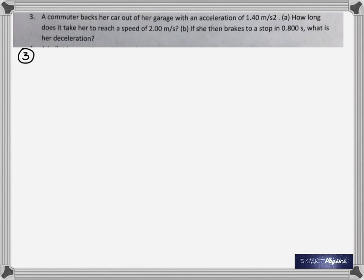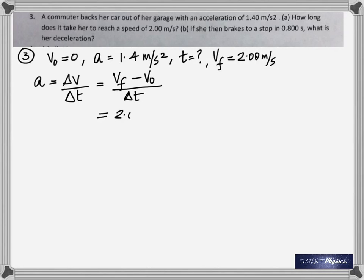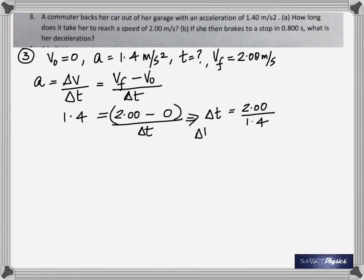Number 3: a commuter backs out of her garage with an acceleration of 1.40 m/s². How long does it take her to reach a speed of 2 m/s? The initial velocity is 0, acceleration is given in proper units, final velocity is 2 m/s. Acceleration equals change in velocity divided by time: (2 minus 0) divided by time equals 1.4. Rearrange and calculate — you get the time to be 1.43 seconds.